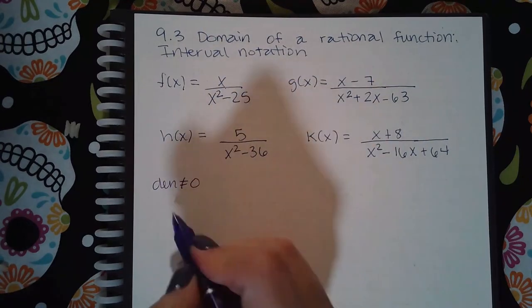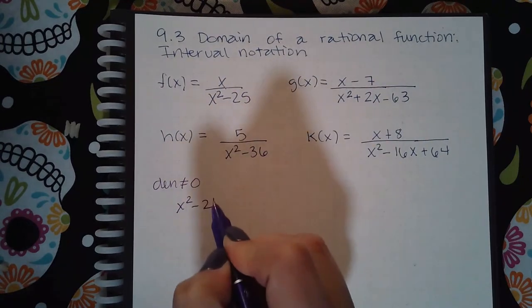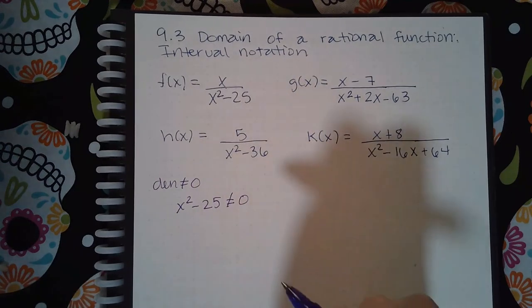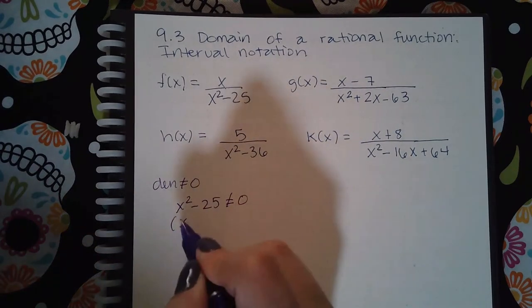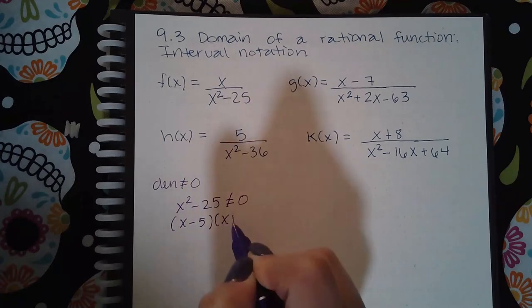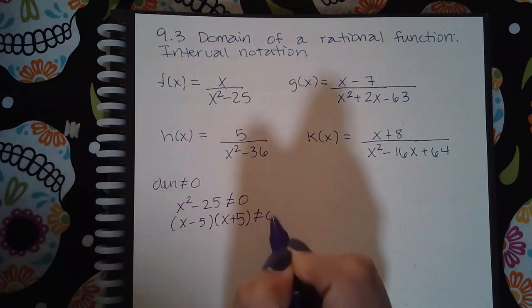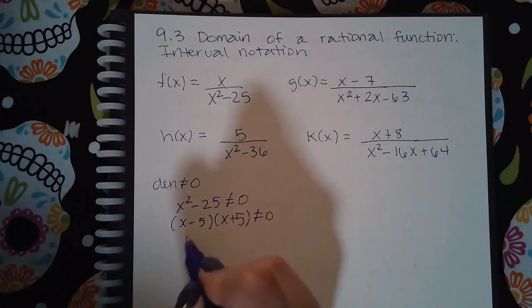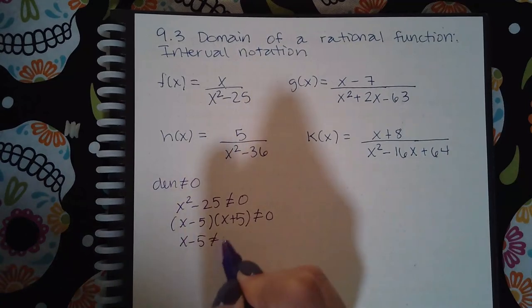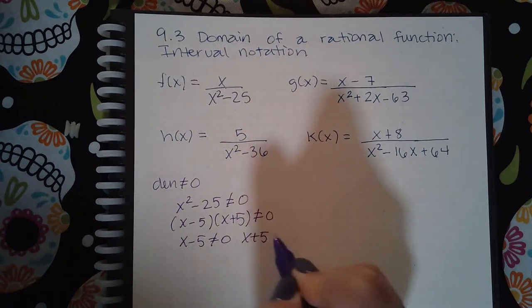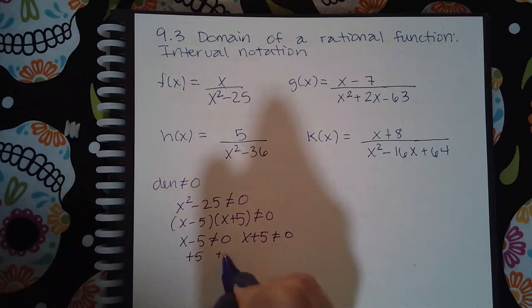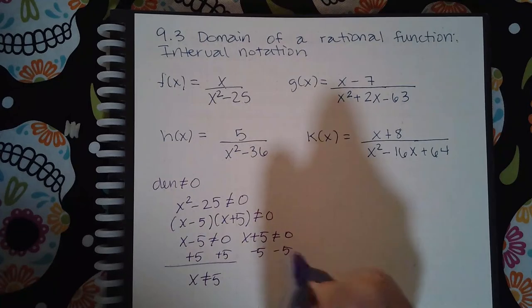So for f, this denominator, x squared minus 25, cannot equal zero. Which means, if I factor this, this expression cannot equal zero. And if I set each factor not equal to zero, then I can say x cannot equal five, and x cannot equal negative five.